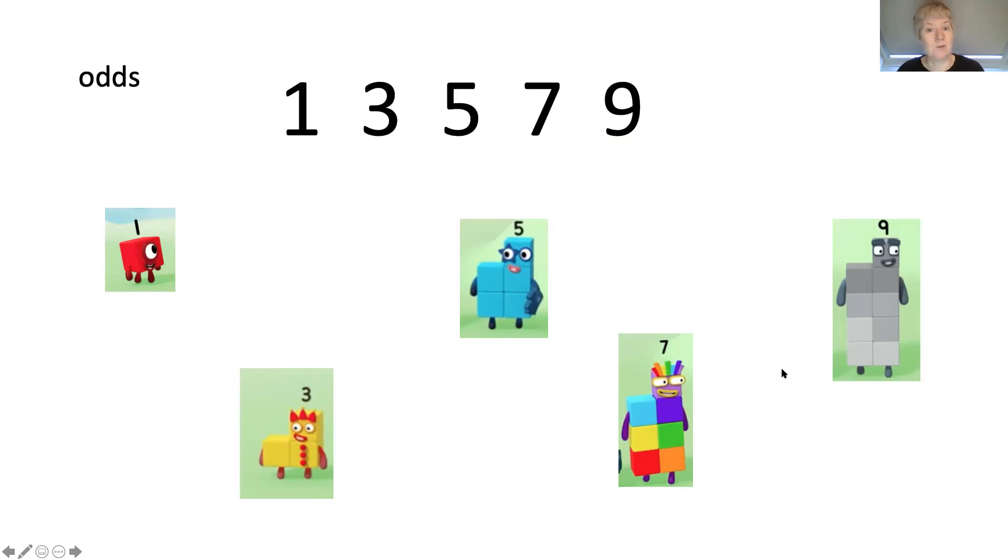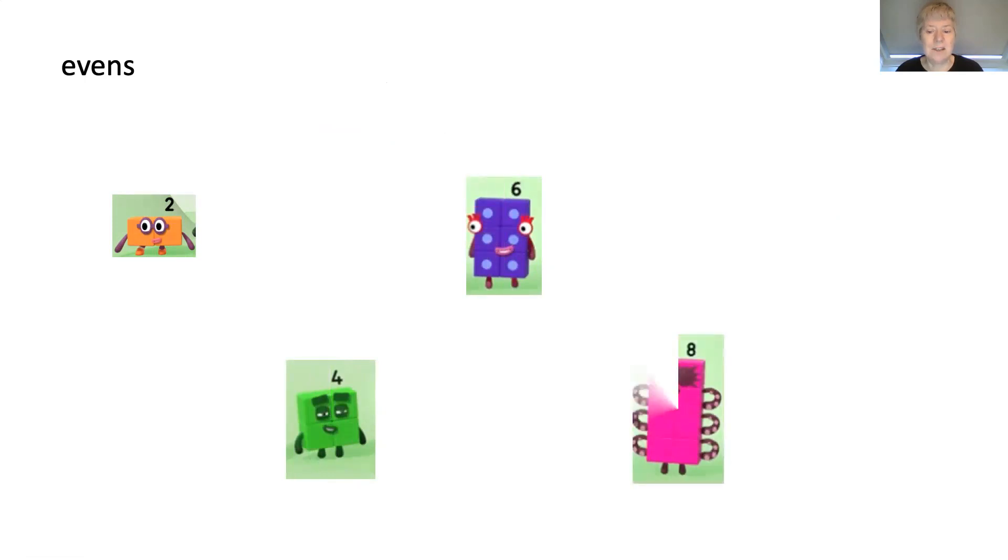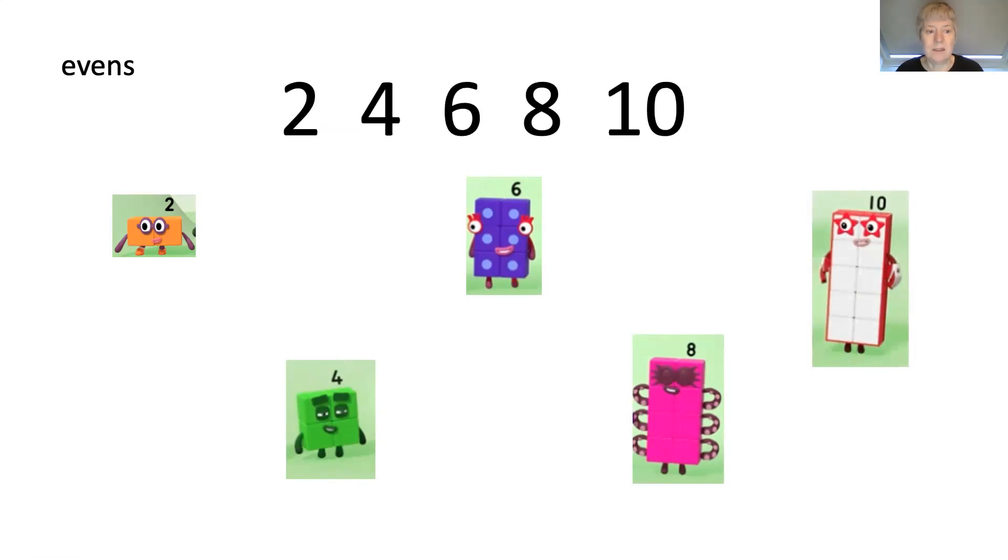Let's have a look at the evens. Have you remembered what was the same about them? The evens were two, four, six, eight and ten. And there are their numbers. Have you remembered what's the same about them? That's right. When they're two blocks wide, they have a flat top, don't they? So all of these number blocks have a flat top when they're two blocks wide. They don't have anything sticking up. They have no odd block sticking up.